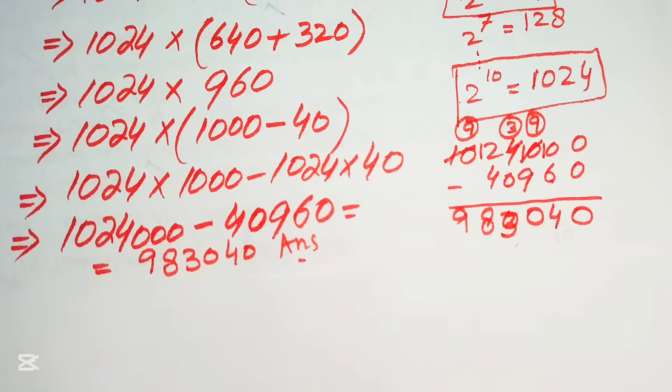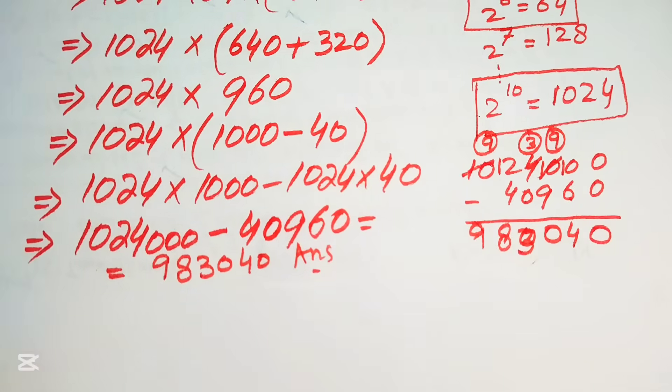So our final answer is 983,040. This is the simplified form of the given algebraic expression. Thank you so much for watching this video — please subscribe to my channel for more exciting videos.